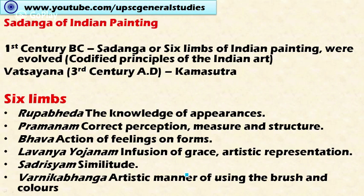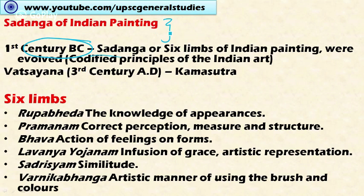The reason for this continuation of style and principles in Indian painting is the Sadanga. The Sadanga is a codified principle of Indian art — the principles are codified in the form of Sadanga, first recorded during the 1st century BC by an unknown author. Sadanga means the six limbs of Indian painting, that is, six principles to be kept in mind while undertaking paintings.